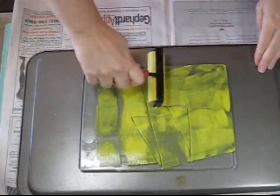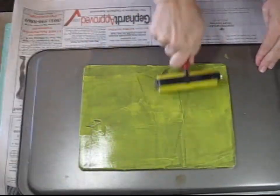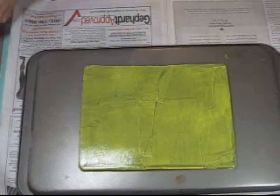So the first thing you want to do is put some of your basic craft acrylic paint down on your jelly plate and take the brayer that's in the kit and brayer it out.